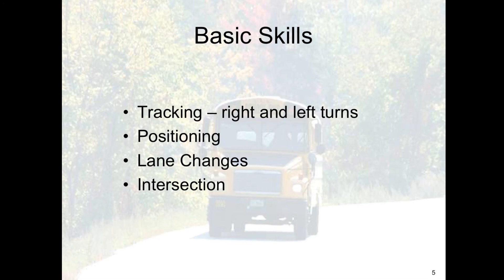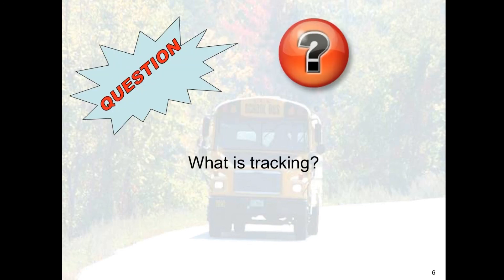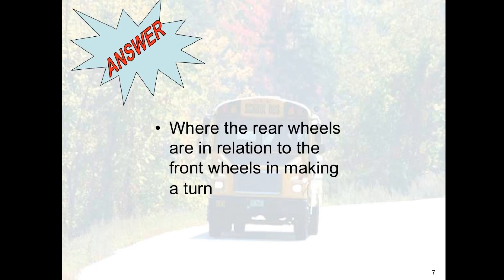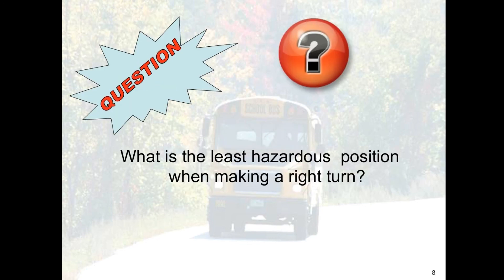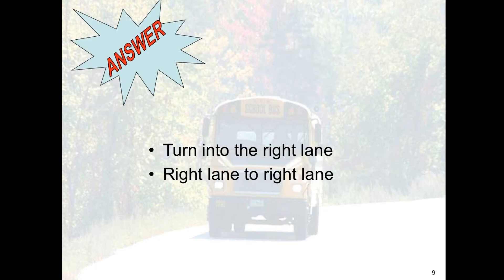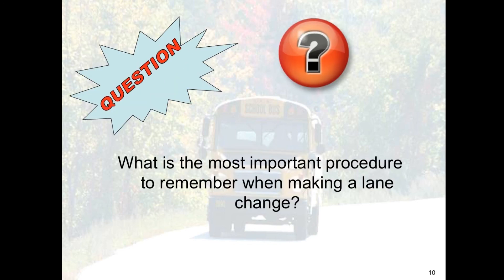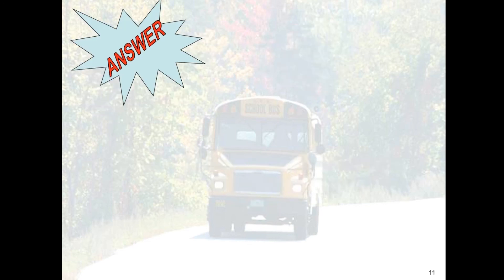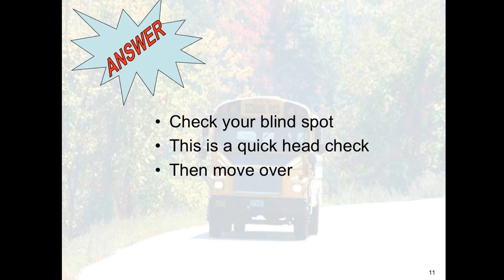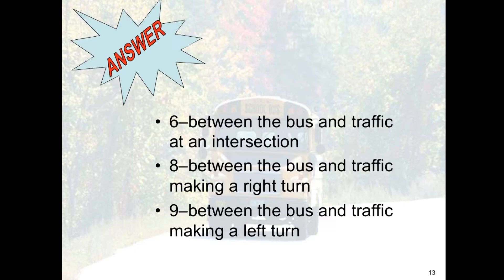Let's do a quick review of our basic skills. What is tracking? Tracking is the relation of the rear wheels to the front wheels in making a turn. What is the least hazardous position when making a right turn? Turning from the right lane into the right lane. What is the most important procedure to remember when making a lane change? Check your blind spot — this is a quick head check. Make sure it's clear before you smoothly move over. What is the 6-8-9 rule? 6 seconds between the bus and approaching traffic at an intersection, 8 seconds when making a right turn, and 9 seconds when making a left turn.